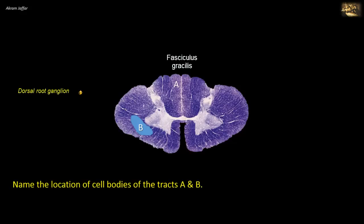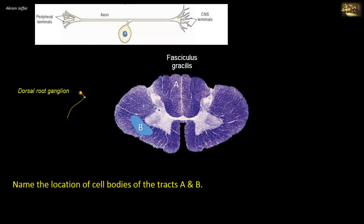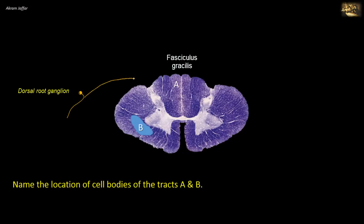The dorsal root ganglion contains pseudo-unipolar neurons with a peripheral process and a central process. The central process enters the spinal cord through the posterior root. The fibers do not relay in the spinal cord but ascend in the dorsal funiculus to reach medullary levels, where they relay in the nucleus gracilis or nucleus cuneatus depending on their origin. These are first-order neurons whose axons are myelinated axons of the medial division of the dorsal root, conveying discriminative touch, proprioception, and vibration.